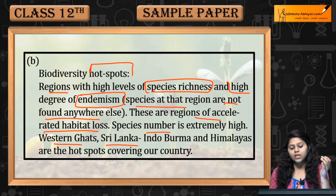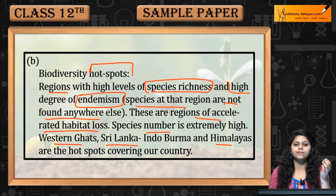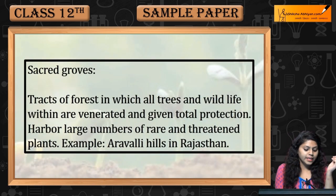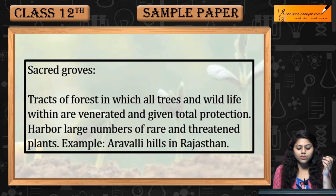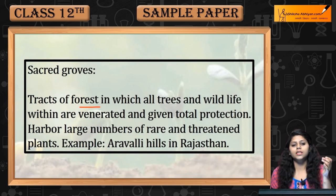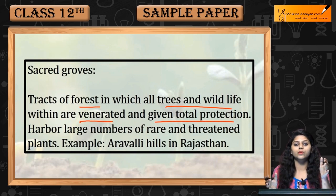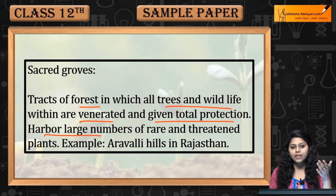Examples of biodiversity hotspots include Western Ghats, Sri Lanka, Indo-Burma, and the Himalayas, which are found in our country. Sacred groves are tracts of forests in which all the trees and wildlife within are venerated and given total protection.